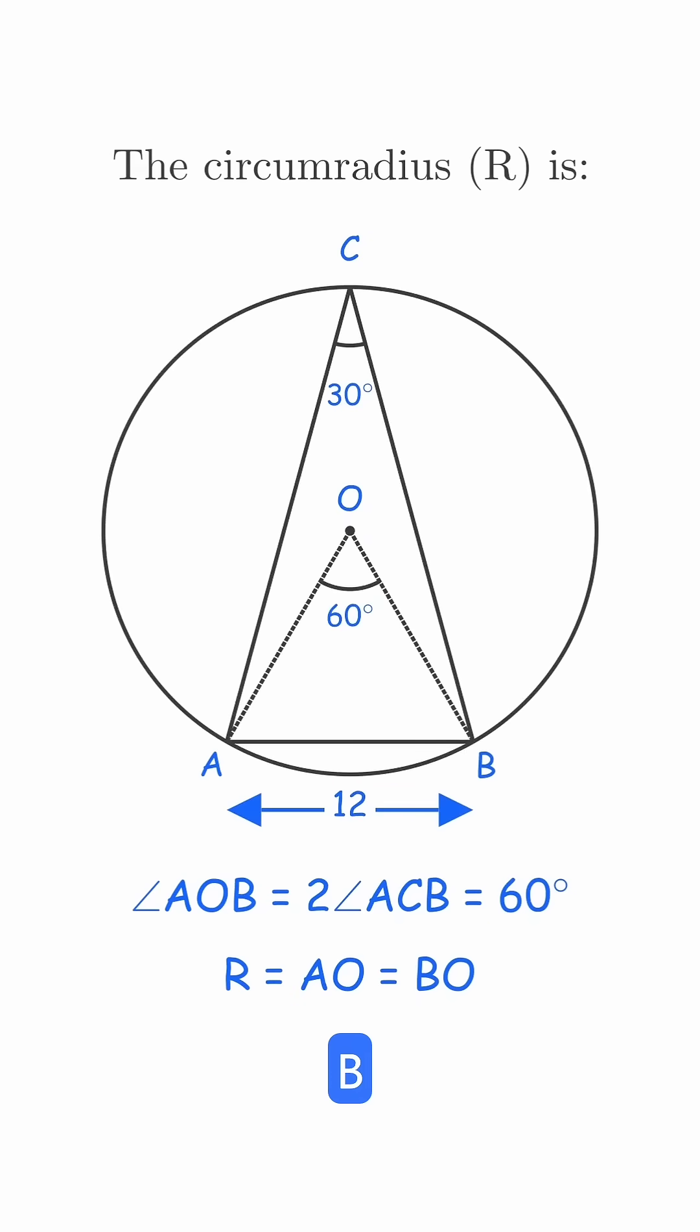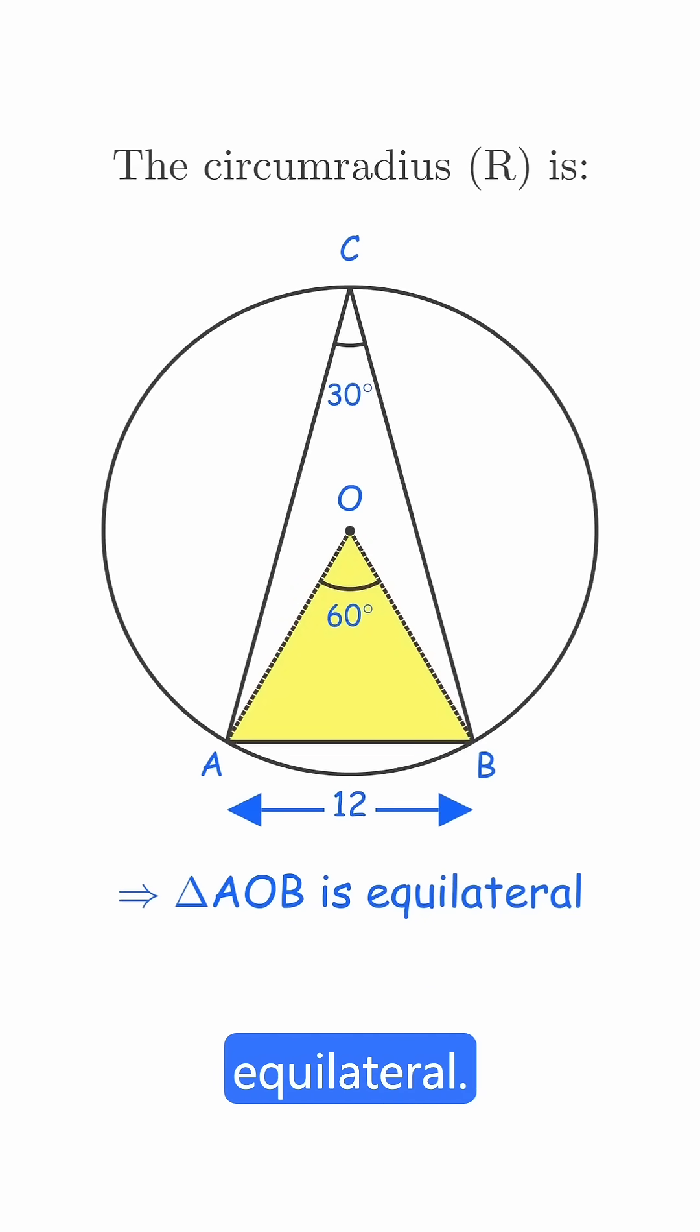Since AO and BO are both radii, triangle AOB is isosceles. And with a 60-degree angle between them, it's actually equilateral.